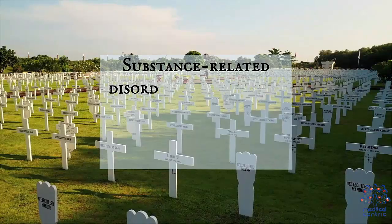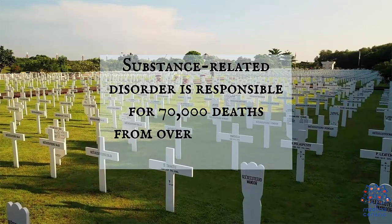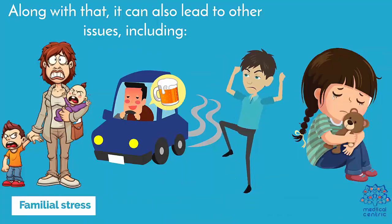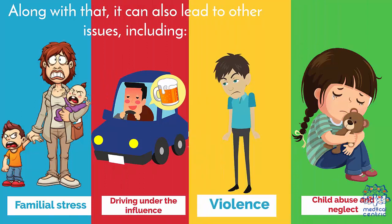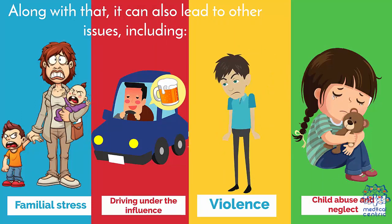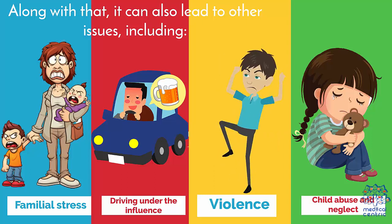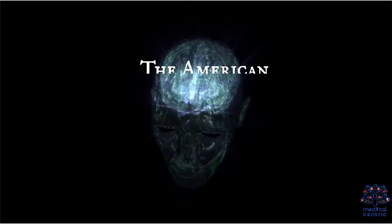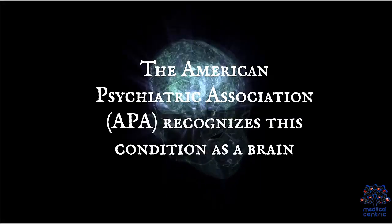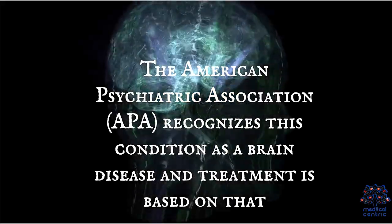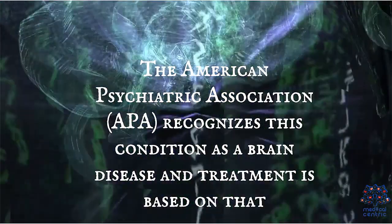Substance-related disorder is responsible for 70,000 deaths from overdose in the U.S. alone. Along with that, it can also lead to other issues, including: 1. Family stress, 2. Driving under the influence, 3. Violence, 4. Child abuse and neglect. The American Psychiatric Association (APA) recognizes this condition as a brain disease, and treatment is based on that.